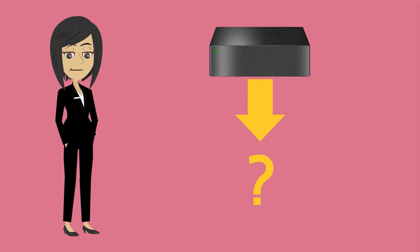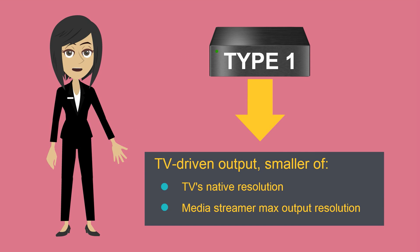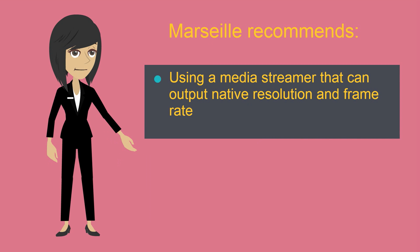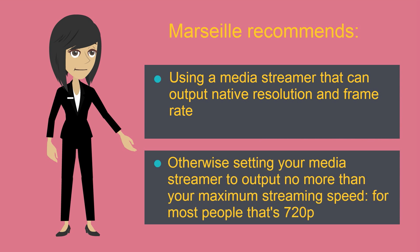One last thing: what comes out of your media streamer over HDMI. Some devices' output is TV-driven, meaning if you have a 1080p 60 TV, they output 1080p 60 no matter what you're watching. Better media streamers are content-driven — they provide native output, for instance 720p 60 for Hulu or 1080p 24 for Netflix Full HD. They defer complex video processing to the TV.